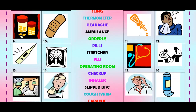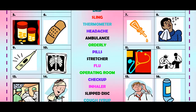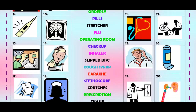Number eleven — eye drops. If your eyes are sick or dry, you use eye drops. Number twelve, this guy has the flu — see his red nose? You have the flu.